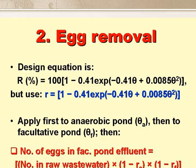The removal of helminth eggs is by sedimentation, and the percentage removal, capital R, is a function of the retention time in each pond, as shown in the equation in black. But it's simpler to use little r, as given by the equation in blue, so that the numbers of eggs per litre of facultative pond effluent is given by their number in the raw wastewater times 1 minus RA times 1 minus RF, where RA and RF are the R values for the anaerobic and facultative ponds respectively.